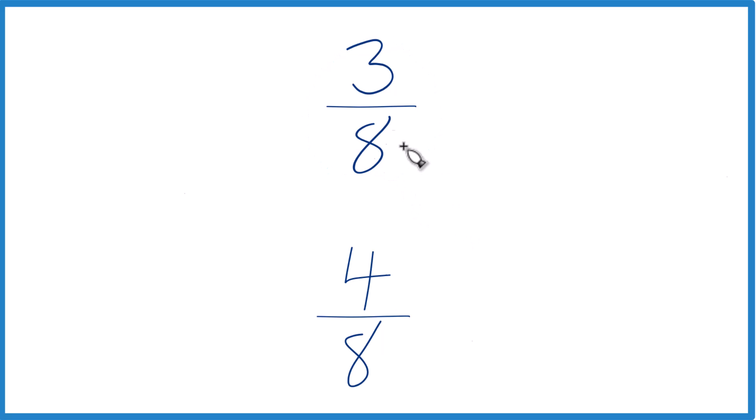One way you could do this, you could take 3 and divide it by 8 on a calculator, get a decimal, divide 4 by 8 on a calculator and get a decimal, and then just compare those. That's one way you can figure out if 3/8 is greater than 4/8.